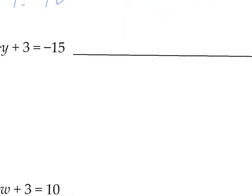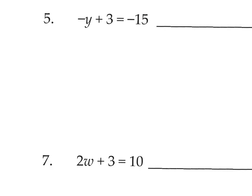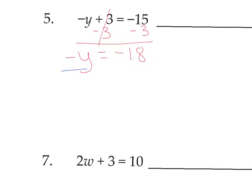On number 5, we have negative y plus 3 equals negative 15. We want to isolate y, so we subtract 3. The opposite of positive 3 is negative 3. We have negative y equals negative 18. We're not done, because we don't want that negative on the y — this is negative 1. To get rid of it, divide by negative 1. Negative 18 divided by negative 1 turns into positive 18. So y equals 18.